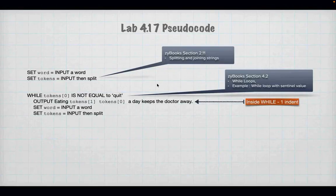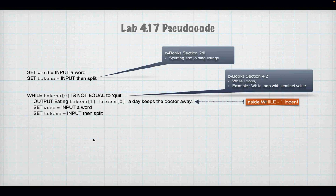The last pseudocode is about sentence tokens. I'm going to put in a word and some tokens, and output something like 'eating [tokens[0]] a day keeps a doctor away'. I input a word, then a token, then do it again — and when the user puts in 'quit', I stop. This one is really about understanding how to write your code to handle sentinel values.